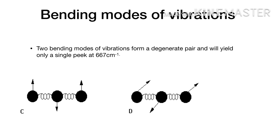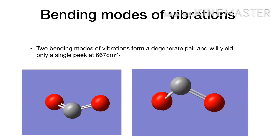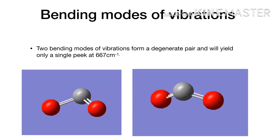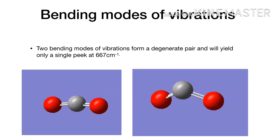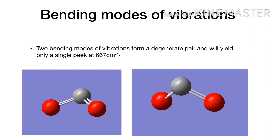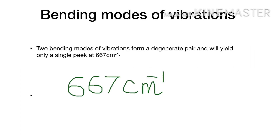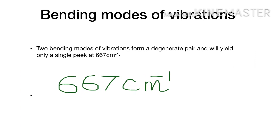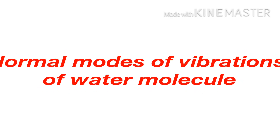Next are the bending modes of vibration. There are two bending modes: in-plane and out-of-plane bending. The frequencies of both vibrations are the same and therefore they form a degenerate pair, yielding only one peak at 667 cm⁻¹.